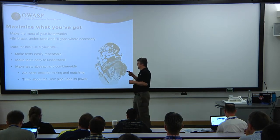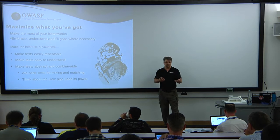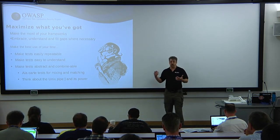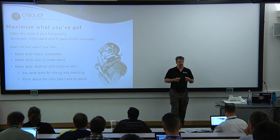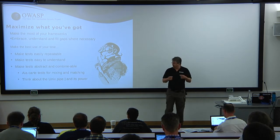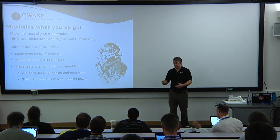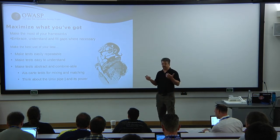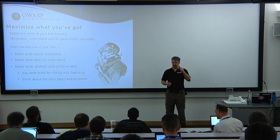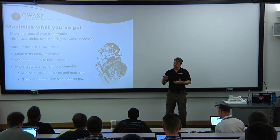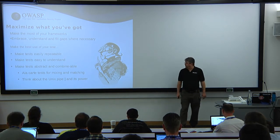Tests need to be easily repeatable and easy to understand, because we have 12 of us now in the product security group and we're often shuffling between tests — if I'm in the middle of testing product A and product B needs a retest, my coworker has to be able to pick up my stuff and go. And then abstract and combinable — this is the idea of the Unix pipe. Make lots of little tests and then combine them to get an end result. That way you can mix and match depending on the context. SSL cipher checking is a great example: you need it for websites and a bunch of stuff. Make that its own little test. I won't do cross-site scripting tests for an API, but I will do SSL for both. Make those Lego blocks and stick them together.